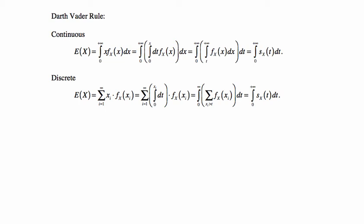For the discrete case, the expected value is the sum over all values of i. I'm taking it from 1 to infinity, but it could be finite as well. It's the same reasoning: x_i times f_X(x_i). We again write this x_i as the integral from 0 to x_i of dt, and we switch the order.